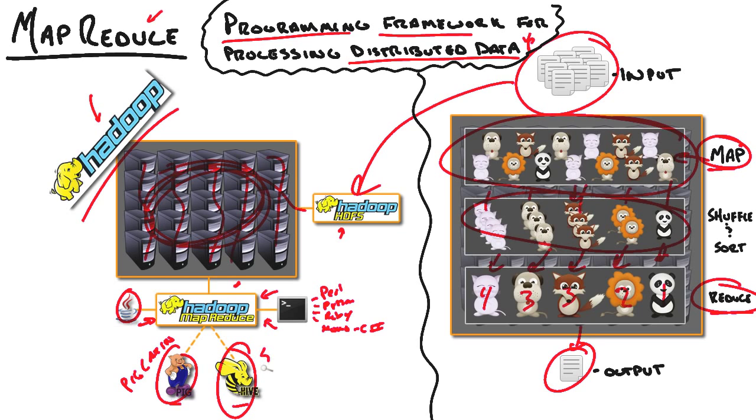Hive is what a lot of data professionals gravitate to because it's essentially SQL for Hadoop. Its language is called HiveQL. It's a dialect of SQL, and if you've written any SQL statements at all, then you'll feel right at home with Hive. So whether you use it directly or indirectly, MapReduce is at the center of data processing in Hadoop.